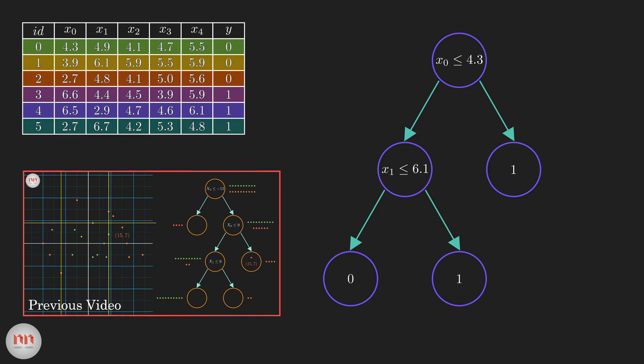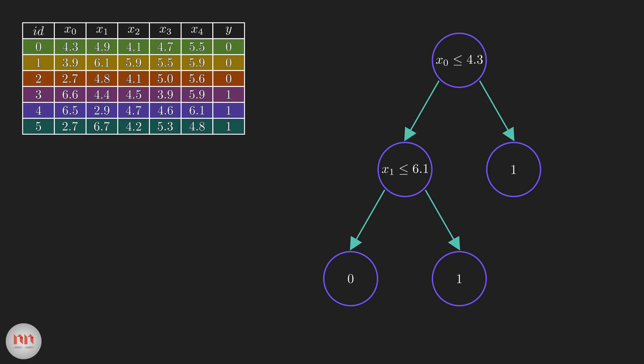In short, a decision tree splits the data set recursively using the decision nodes unless we are left with pure leaf nodes. And it finds the best split by maximizing the entropy gain. If a data sample satisfies the condition at a decision node, then it moves to the left child, else it moves to the right. And finally, it reaches a leaf node where a class label is assigned to it.